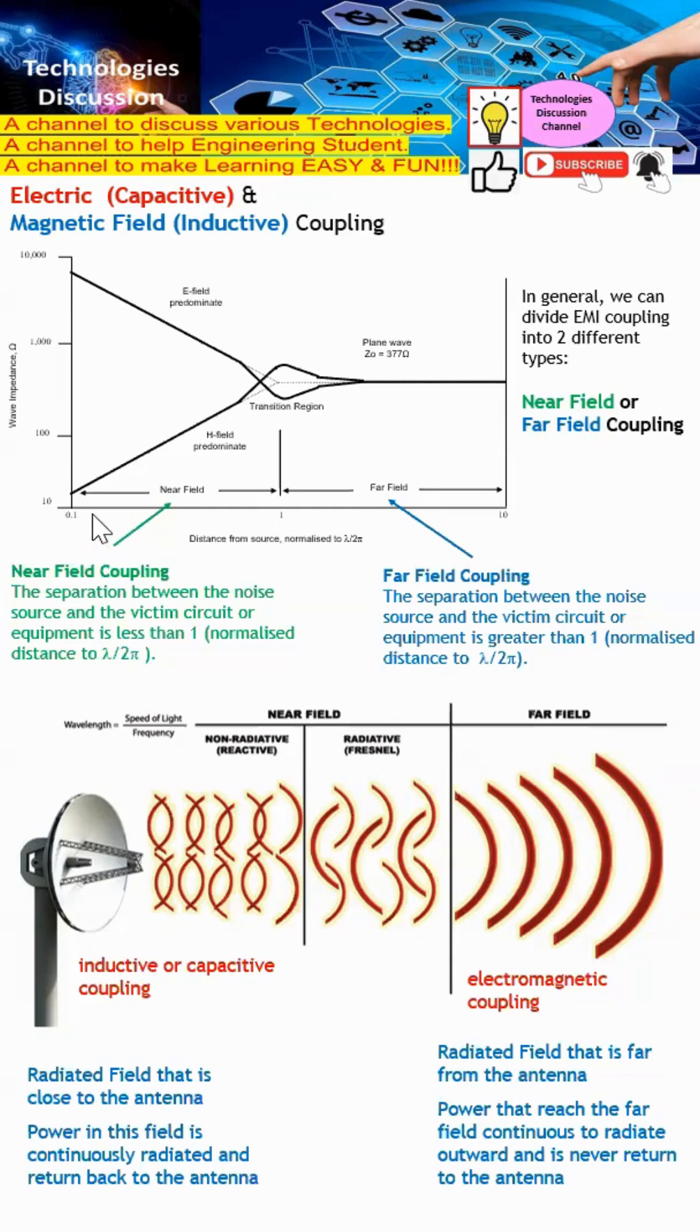In this diagram here, you can see that the x-axis is the distance from the source, while the y-axis is the wave impedance. When they are at the near field coupling case, the separation between the noise and the victim are actually very close. In fact, they need to be less than one, which is lambda over 2 pi. As for far field, the separation between the noise and the victim is greater than one, which means they have a distance longer than lambda over 2 pi.